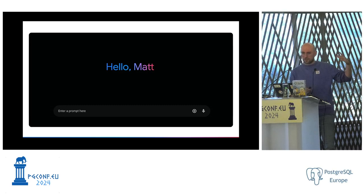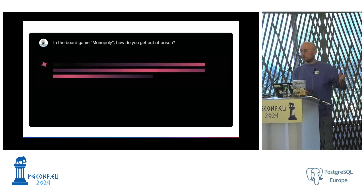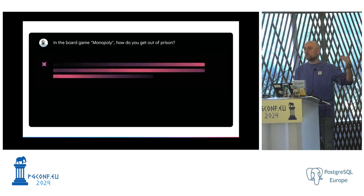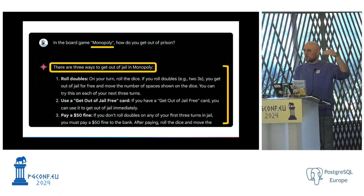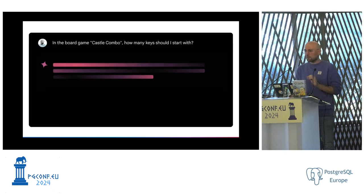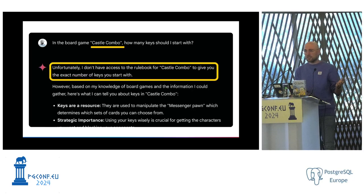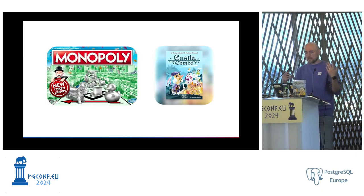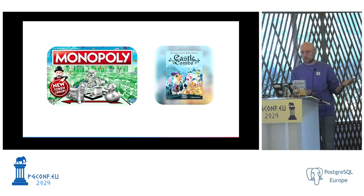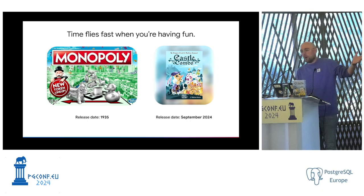Let me show you the problem with two examples. First, I asked Gemini a question about Monopoly — everyone knows Monopoly, and so does Gemini. I asked a simple question: how do you get out of prison? He answered correctly with the three ways to get out. The next question is about a brand new game, and unfortunately Gemini is unable to give me the right answer — he says he doesn't have access to the rulebook of Castle Combo.